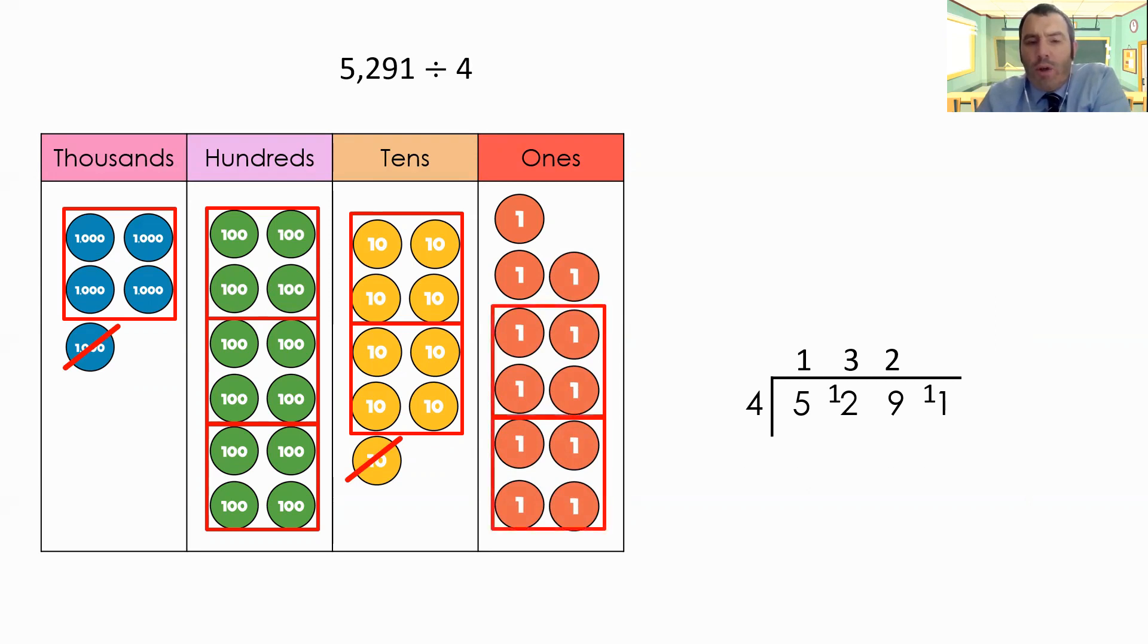And I'm back to the same method as I did before. One lot of four, two lots of four. And I've got three left over. I don't quite have another group of four to use. So my two goes there. I don't have another column to exchange these into. So what I need to do, these are my remainder. These are what's left over when I've completed my calculation.